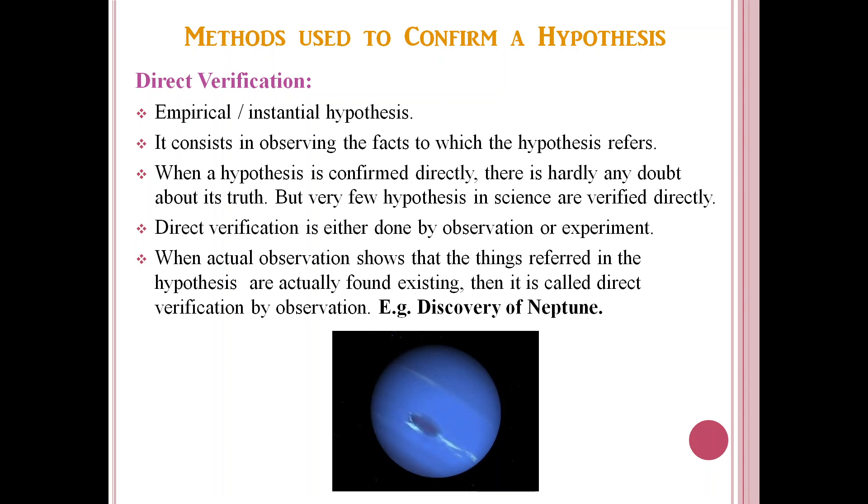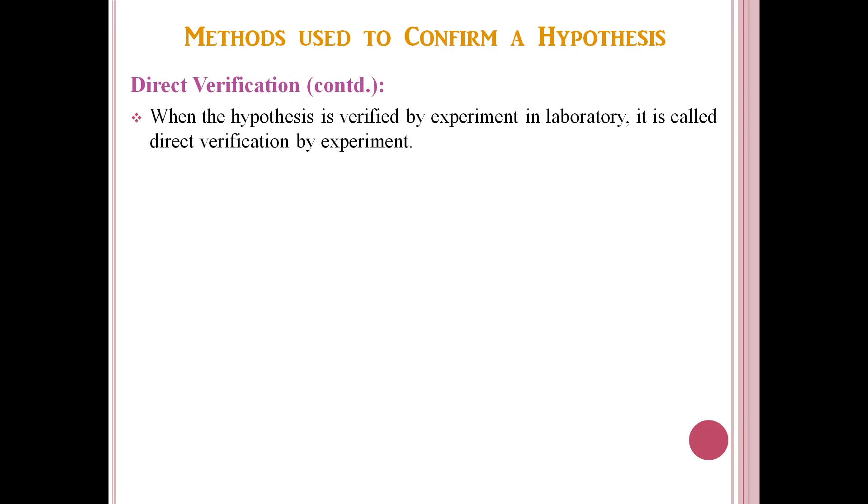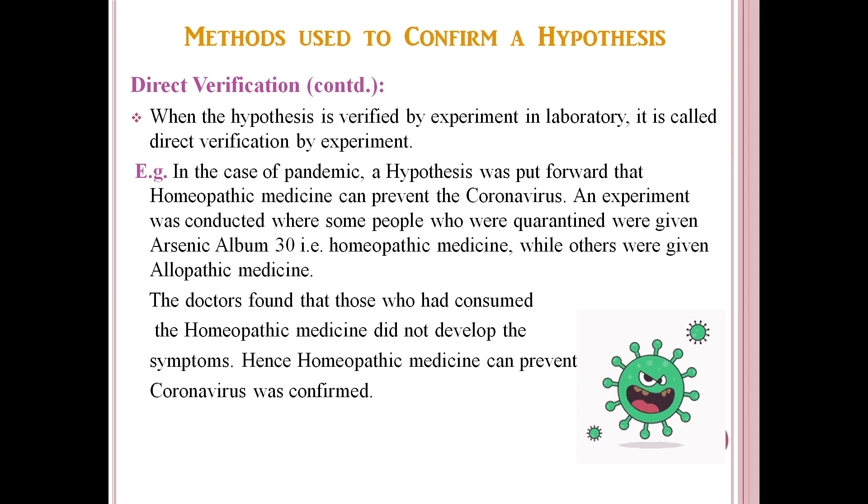Now when the hypothesis is verified by experiment in the laboratory, it is called direct verification by experiment. In the case of pandemic, a hypothesis was put forward that homeopathic medicine can prevent coronavirus.